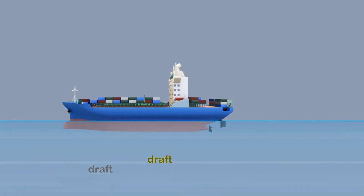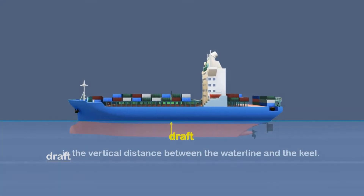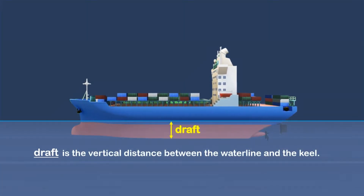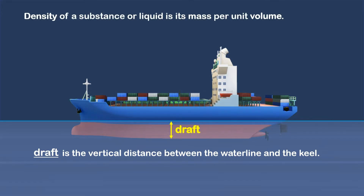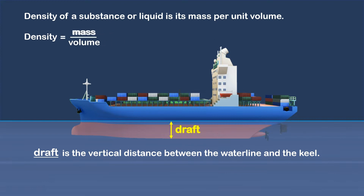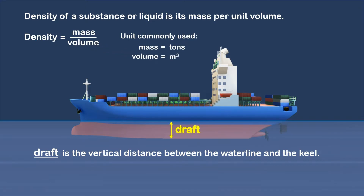A ship's draft is the vertical distance between the waterline and the keel. The density of a substance or liquid is its mass per unit volume. In ship stability, the unit commonly used for mass is tons, for volume cubic meters, and for density tons per cubic meter.